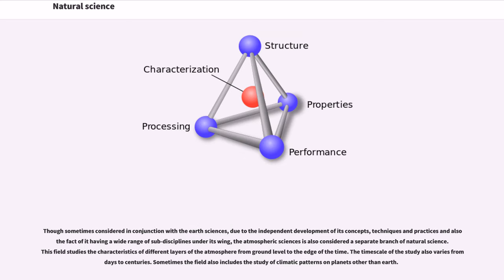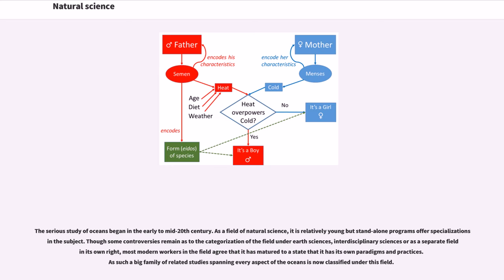Though sometimes considered in conjunction with the earth sciences, due to the independent development of its concepts, techniques and practices, the atmospheric sciences is also considered a separate branch of natural science. This field studies the characteristics of different layers of the atmosphere from ground level to the edge of space. The timescale of the study also varies from days to centuries. The serious study of oceans began in the early to mid 20th century. As a field of natural science, it is relatively young but stand-alone programs offer specializations in the subject. Most modern workers in the field agree that it has matured to a state that it has its own paradigms and practices.